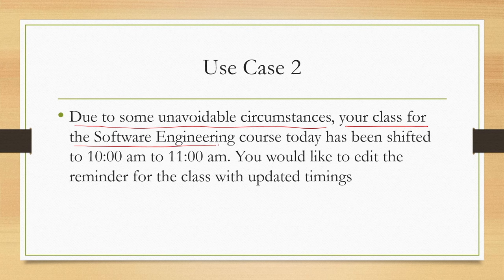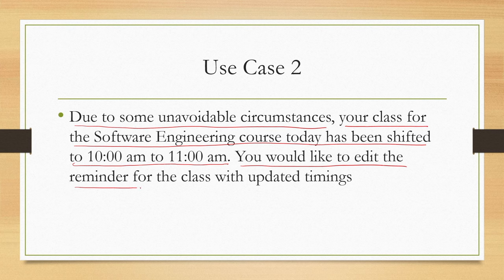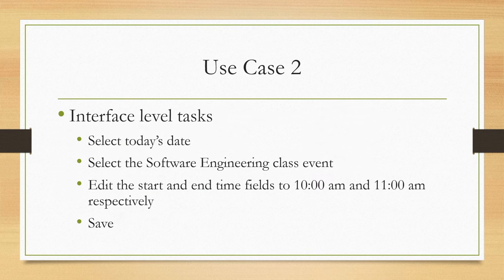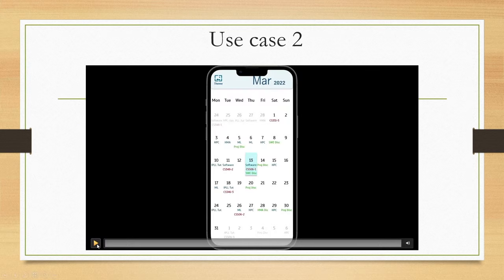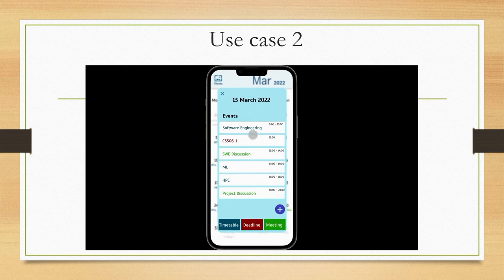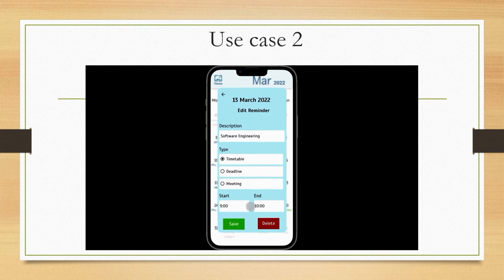The interface-level tasks for editing a reminder are: select today's date, select the software engineering class event, edit the start and end time fields to 10 am and 11 am respectively, and finally save it. This is how the interface-level tasks can be performed.